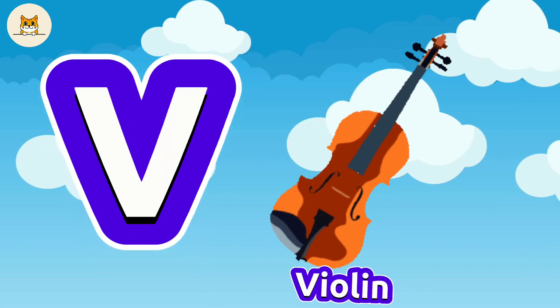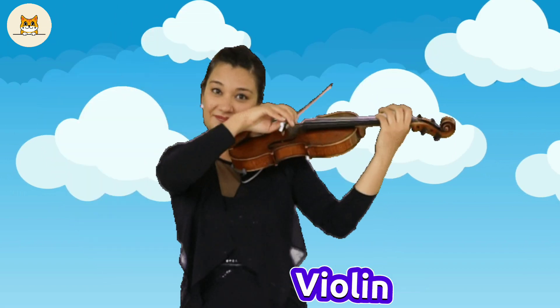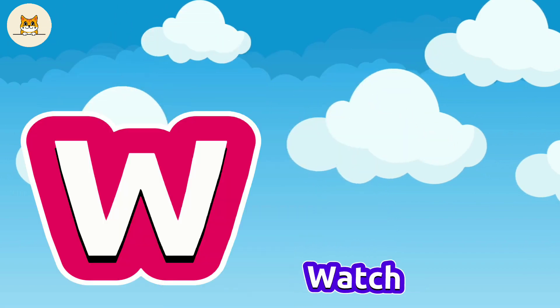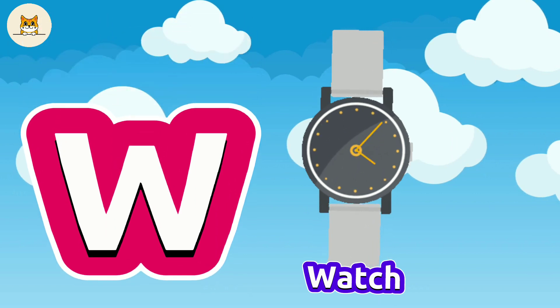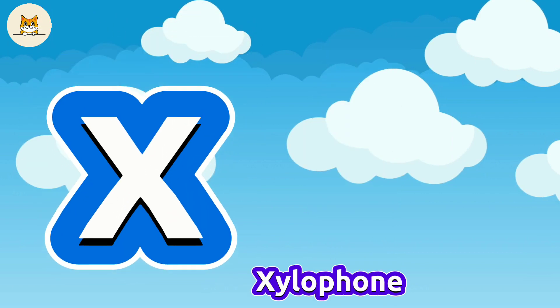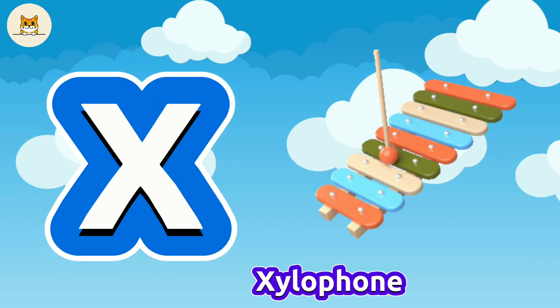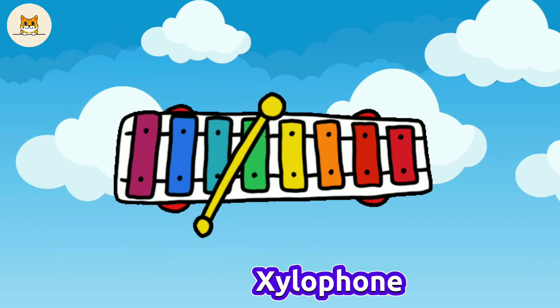V is for Violin. V, V. Violin. W is for Watch. W, W. Watch. X is for Xylophone. Xylophone.